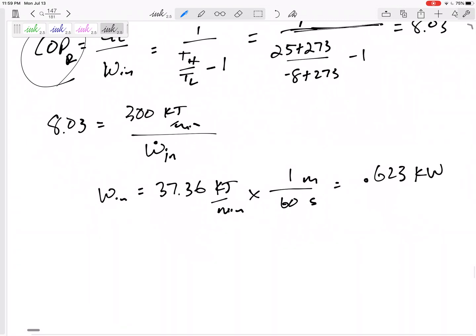Kilowatts. 0.623 kilowatts is the minimum power, or that's the power if this was a Carnot refrigerator.